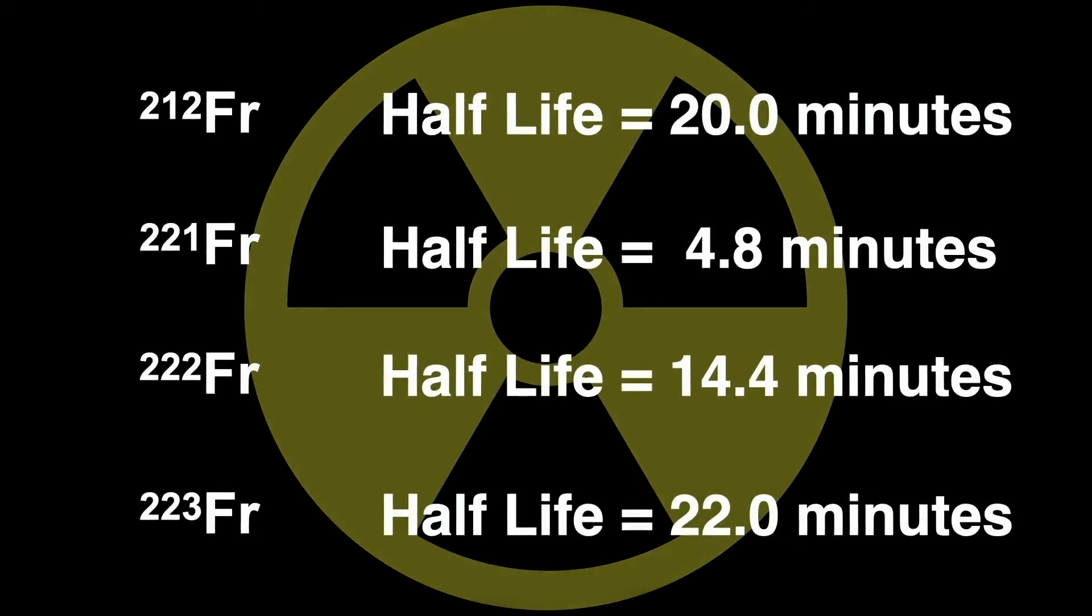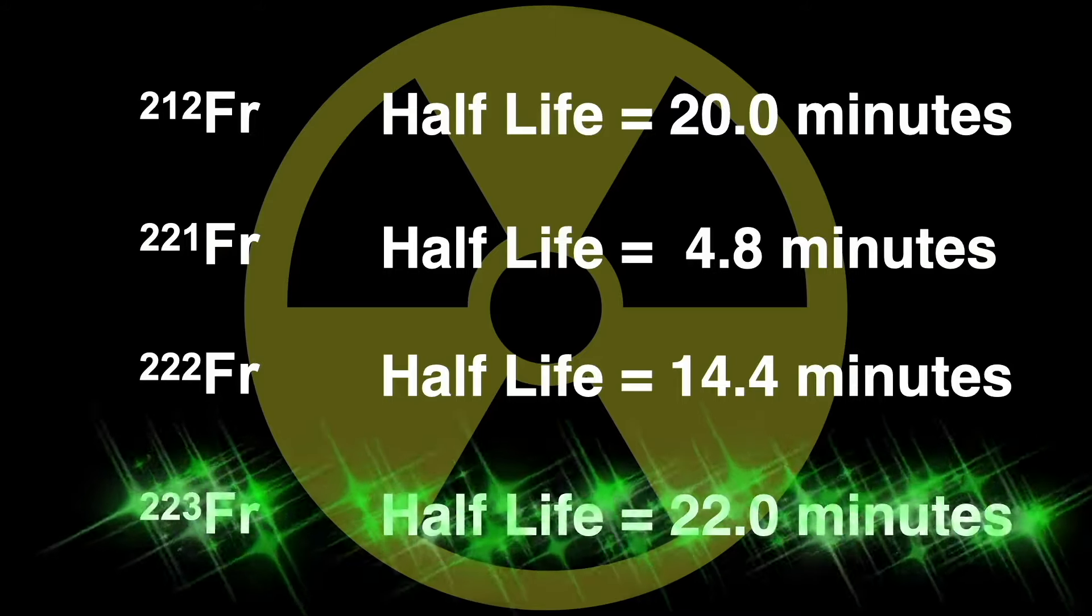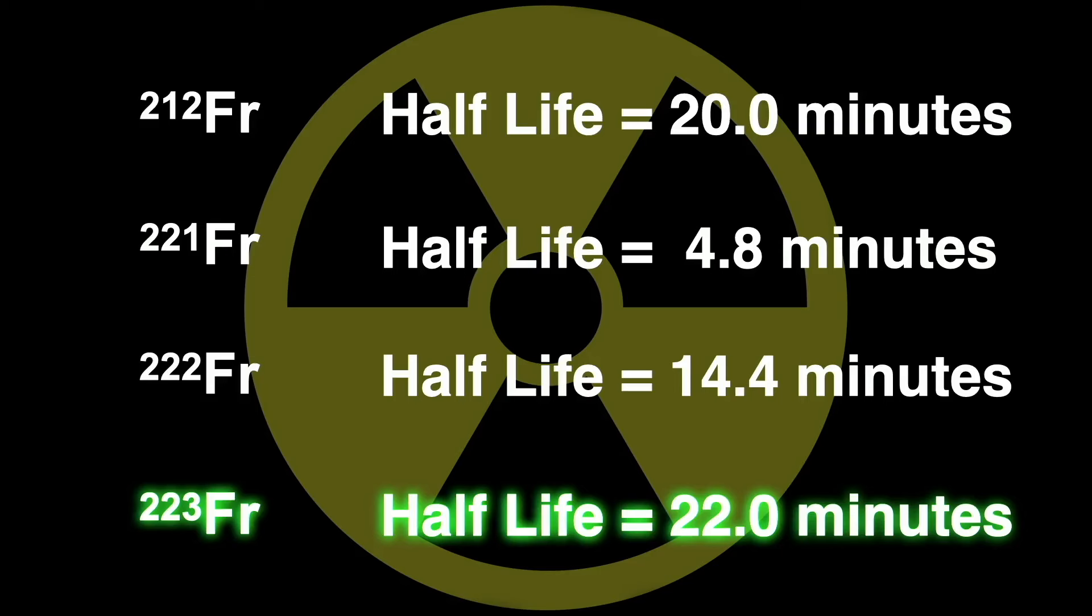Of the isotopes of francium, these are the longest-lived, the ones with half-lives over one minute. The longest francium half-life is francium-223, with a half-life of only 22 minutes. Given that the universe is 13.8 billion years old, and even the Earth is about 4.5 billion years old, all the natural francium has decayed away, except for a tiny bit, which is itself a daughter product of decay from higher up in the periodic table. Francium is constantly created by radioactive decay.